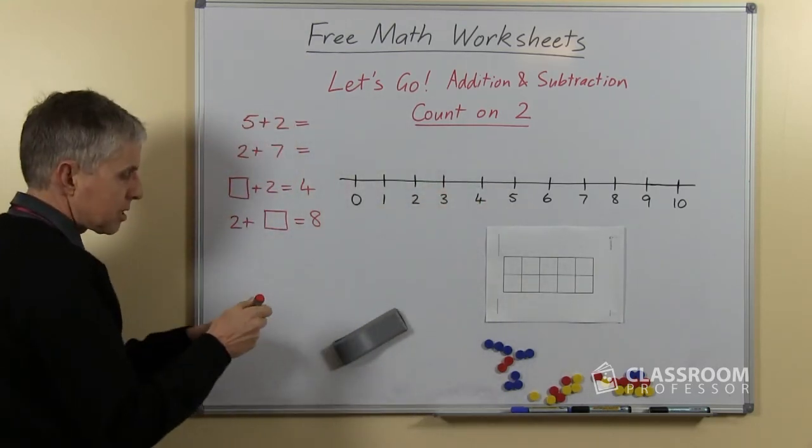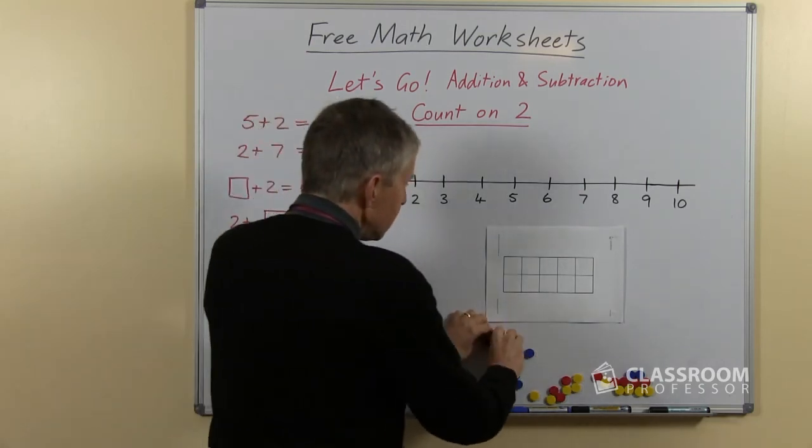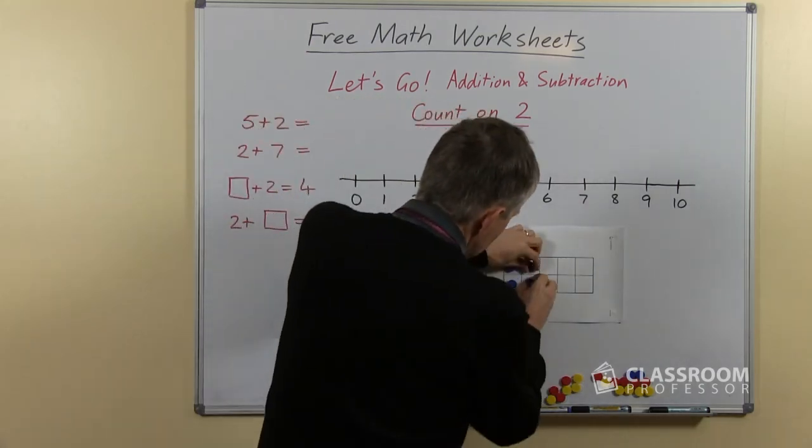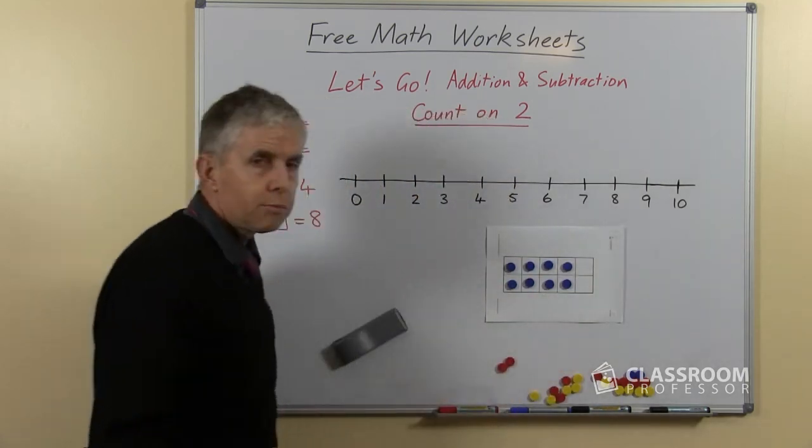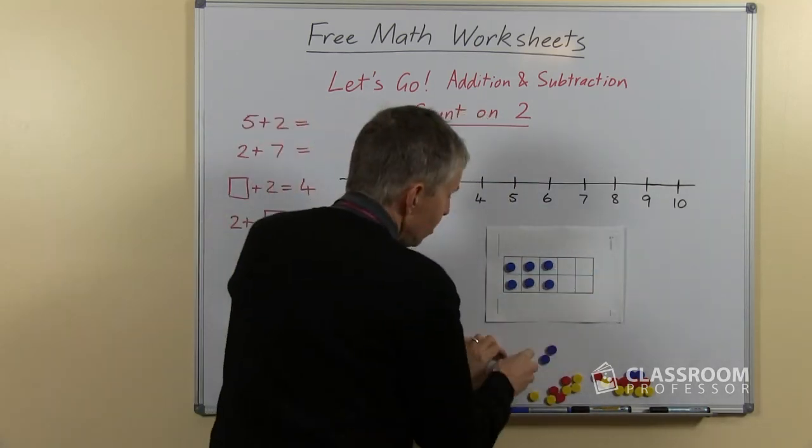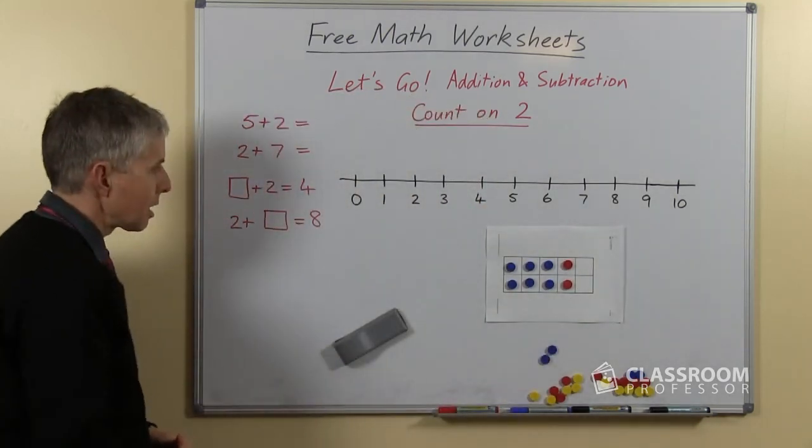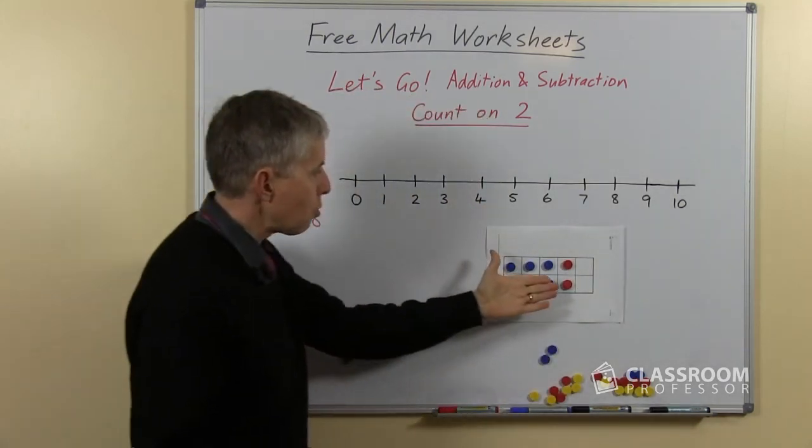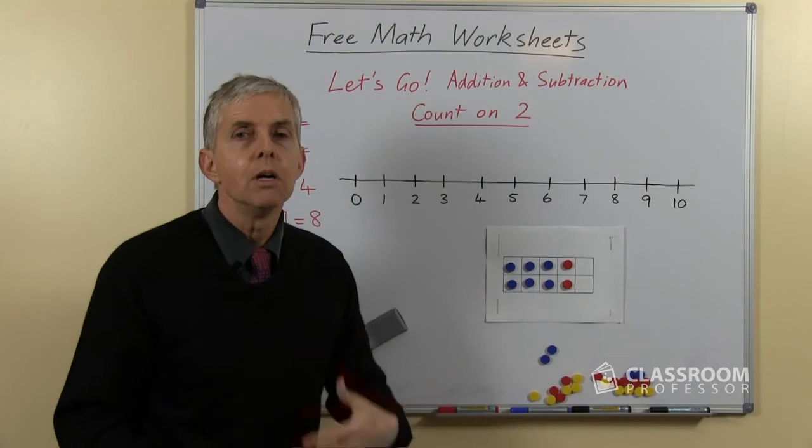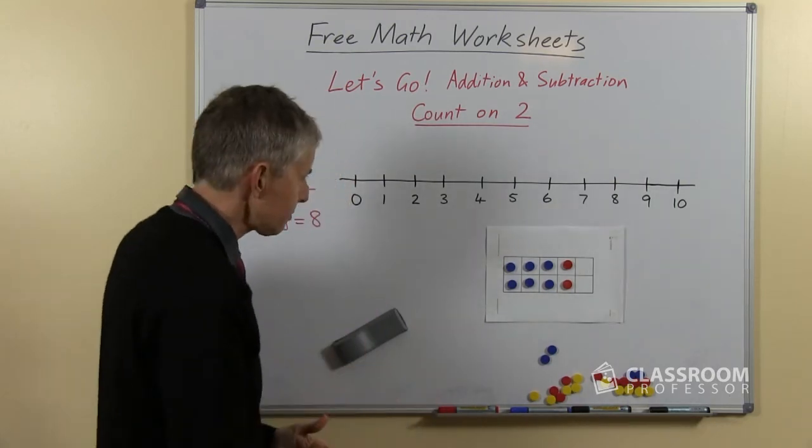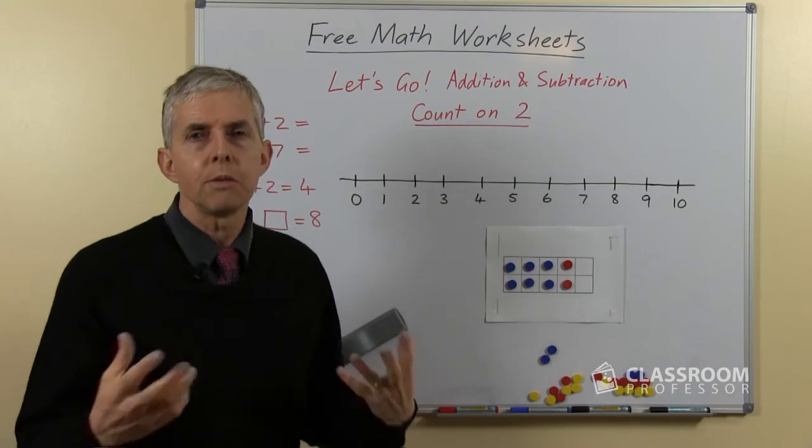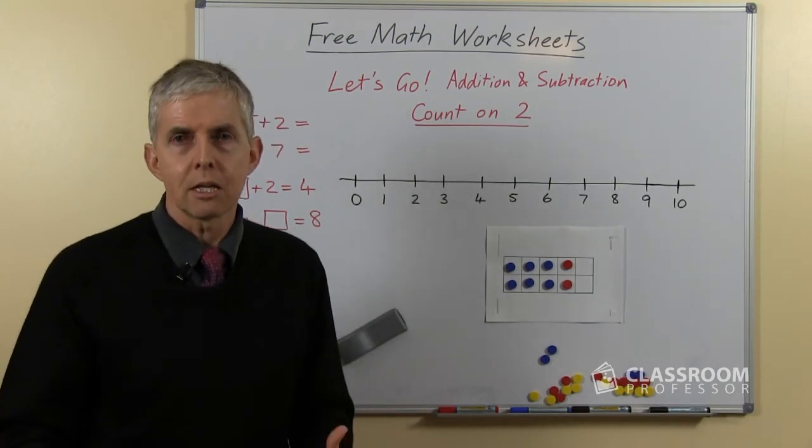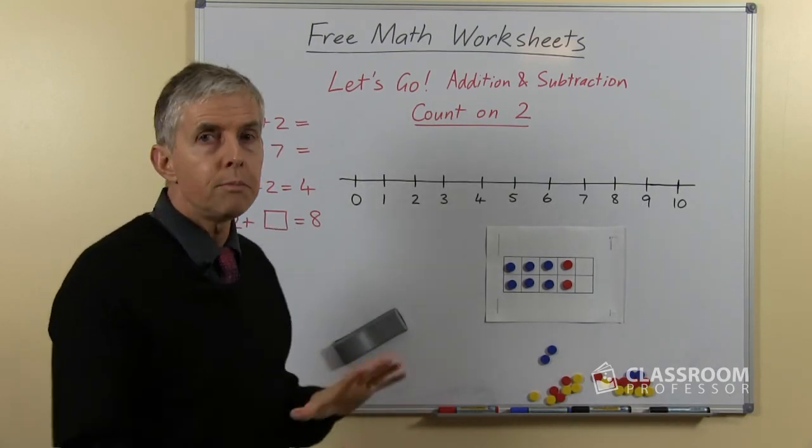Similarly, 2 plus something equals 8 using the 10 frame to show this one. We would need to put out the 8, probably all with one color. Actually, maybe we could do it this way with 2 of them in another color and say, 2 plus what equals 8? What's the other number when we've added 2 to it? So reasonably straightforward, but it's important that the students develop this ability to picture the numbers in their head and ultimately be able to think and recall their number facts independently of the resources.